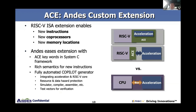What does Andes have to solve this problem? We have something called Andes Custom Extension — we call it ACE. You can do three things with it: create new instructions to accelerate performance, create attached coprocessors, and create a new dedicated memory location. ACE works with C, works with paired simulators, provides great semantics for new instructions, and it's semi-automatic custom instruction generation.